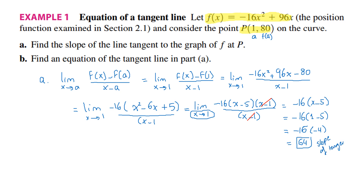Now we are done with part A. Let's move to part B. In part B, we want to find an equation of the tangent line from part A. So I'm going to use the formula y minus f of a equals the slope of the tangent times x minus a, where a is equal to 1.